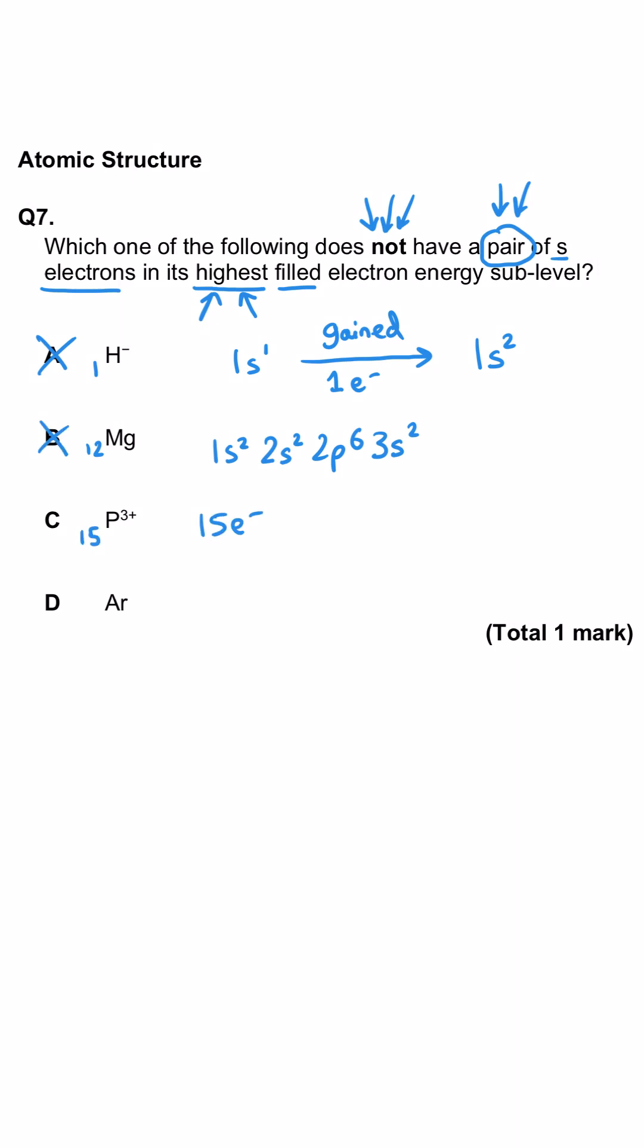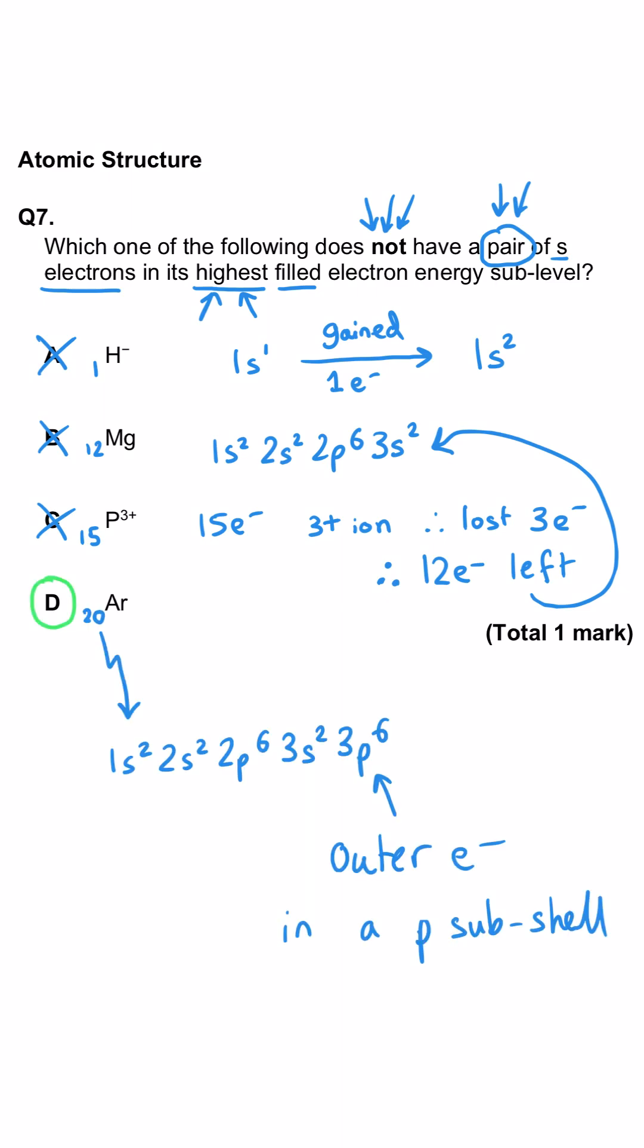Phosphorus has got 15 electrons. Because it is 3+, it must have lost 3 electrons, which brings it down to 12 electrons, which is the same as magnesium as an atom, so that means it will have the same electron arrangement, and so that will also finish in 3s2, and again, that's a pair. Argon, therefore, has to be the correct answer, and it's a noble gas. Its outer shell electrons are in the 3p subshell.